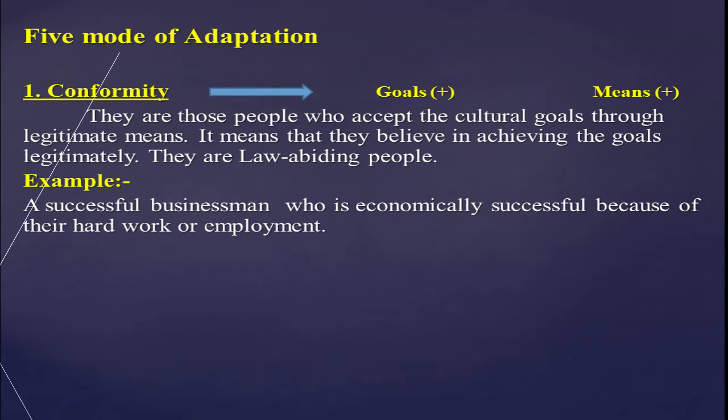The first mode of adaptation is conformity, where goals are positive and means are also positive. These are people who accept the cultural goals — the American dreams — and strive to achieve them through legitimate means. They believe in achieving goals legitimately and are law-abiding people.